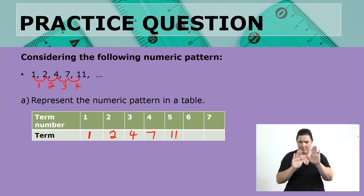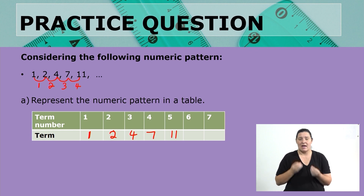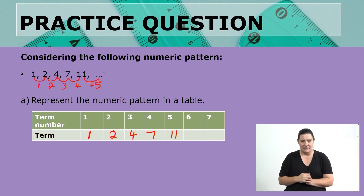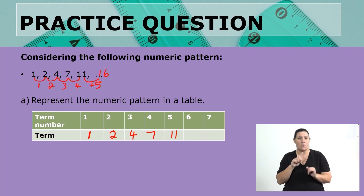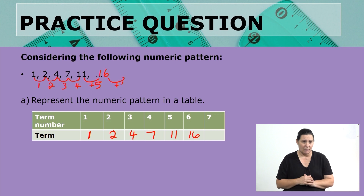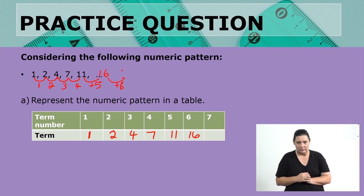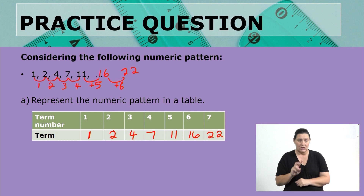Can we continue the pattern to find the sixth and seventh terms? Of course. From 11, the next difference to add is 5, so 11 plus 5 gives 16 — that is the sixth term. For the seventh term, we add 6 to 16, giving us 22. So the seventh term is 22.